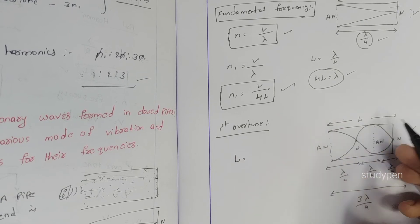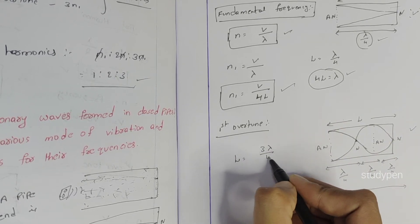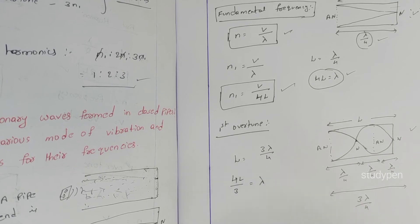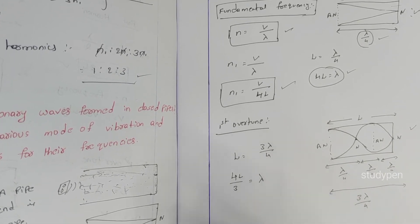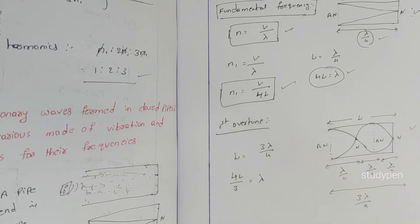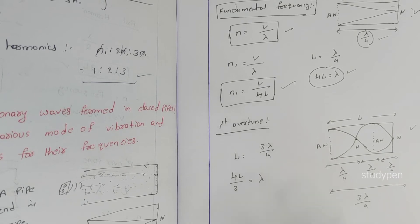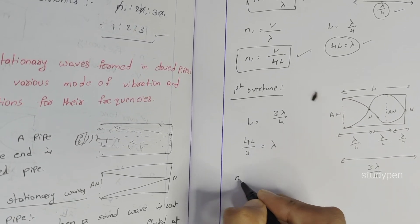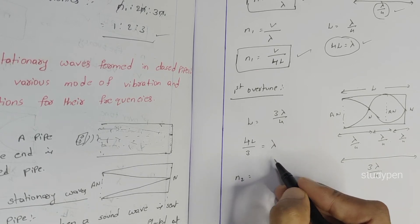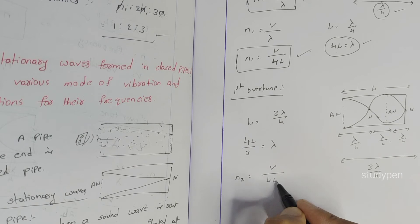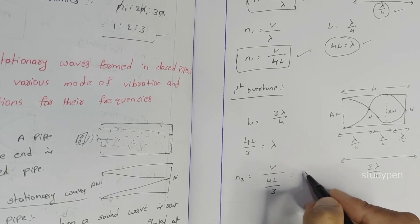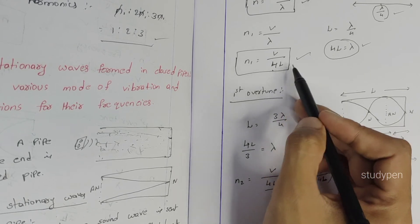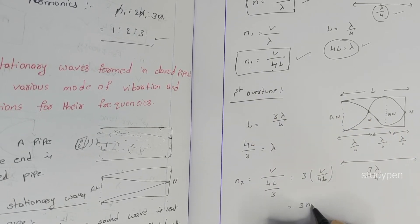For the next mode, the total length equals 3λ/4, so 4L/3 = λ, meaning λ = 4L/3. Velocity is dependent on the medium. Using the frequency formula n = v/λ, we get n2 = v/(4L/3) = 3v/4L = 3n1.